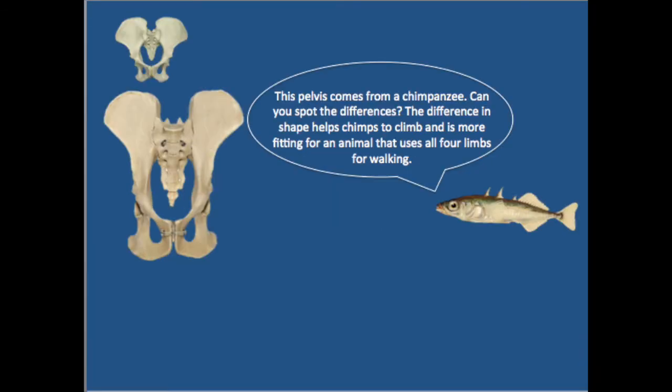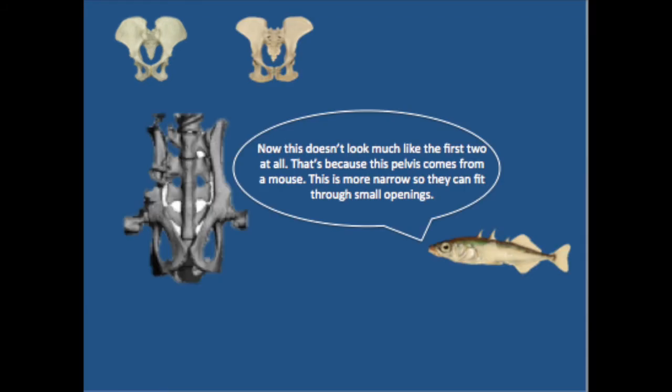This pelvis comes from a chimpanzee. Can you spot the differences? The difference in shape helps chimps to climb and is more fitting for an animal that uses all four limbs for walking.